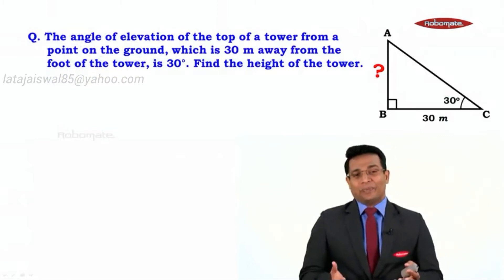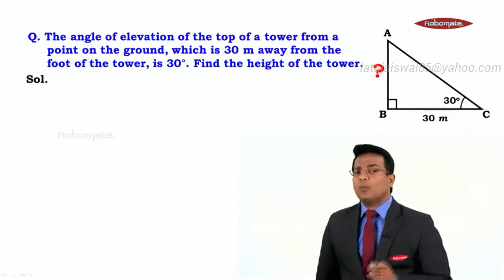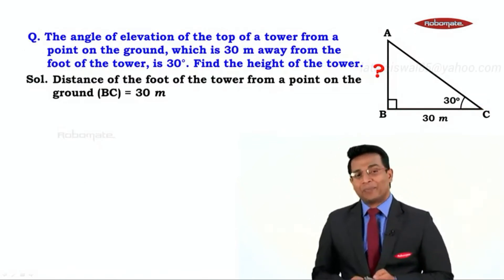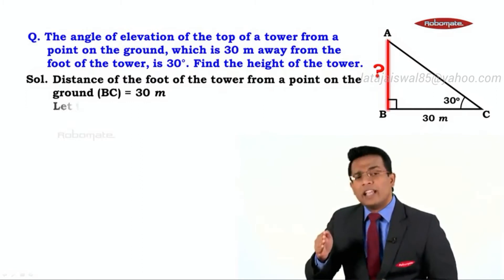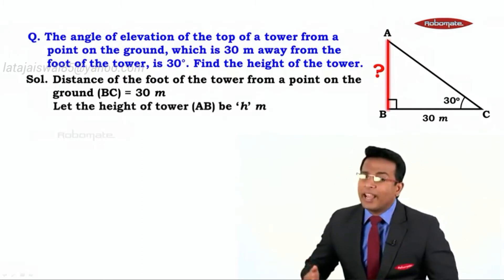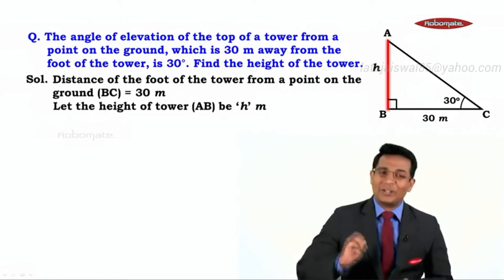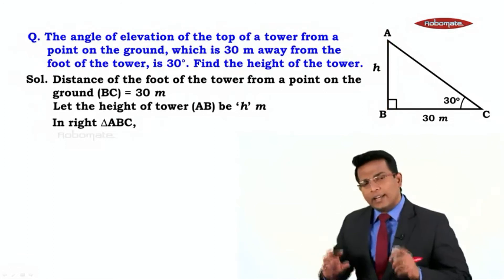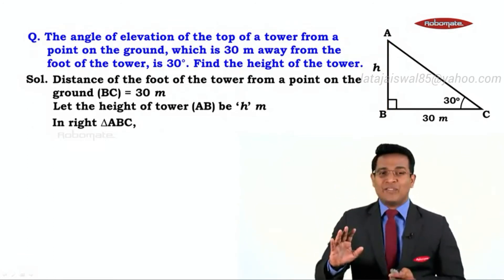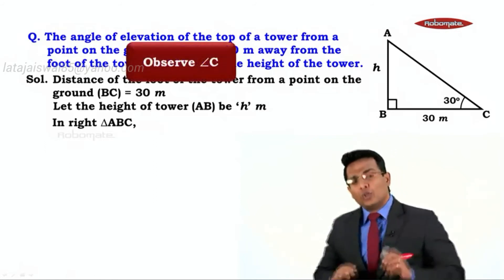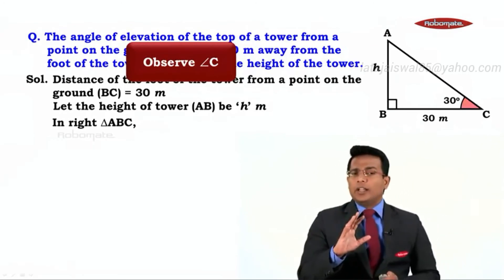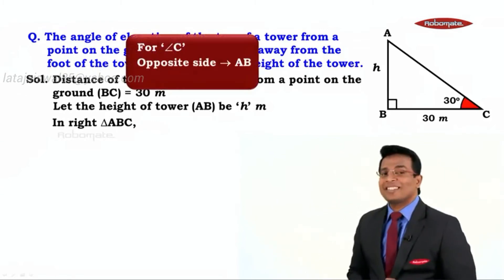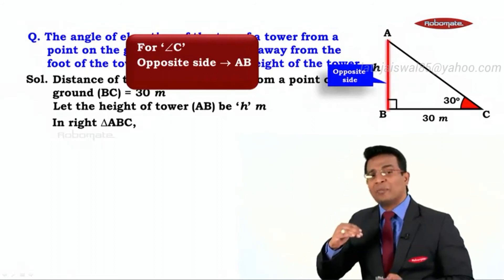Now we describe the figure. BC is the distance of the foot of the tower from the point on the ground, which is 30 meters. AB is the height of the tower, which we denote as h meters — that is what we need to find. The angle ACB is given as 30 degrees. In the right angle triangle, we search for the acute angle, which is angle C.